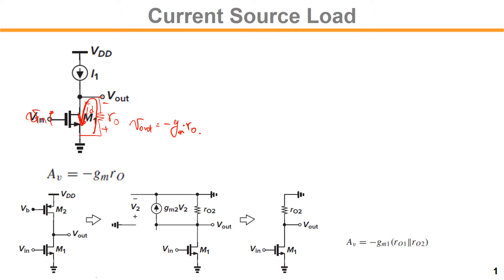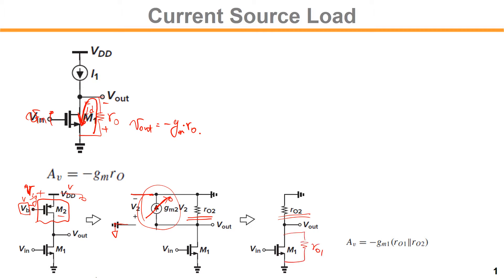If you consider the output resistance of the PMOS current source, ROP: the input gate voltage is fixed at DC, so there is no variation. The input voltage is tied to zero and the source node is VDD, so that is AC ground. No variation on the VSG of M2, so that current will be zero. We are only seeing RO2 at the load, so RO1 in parallel with RO2. The gain is GM1 times RO1 parallel with RO2.